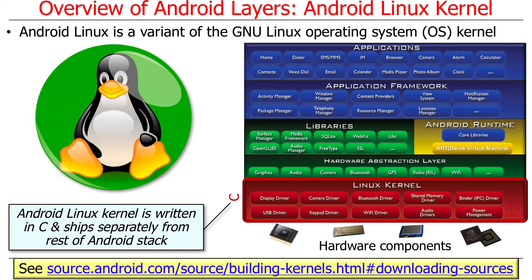If you go to source.android.com, you'll find access to Git repositories where you can check out Android — everything from above the kernel up to the app layer. There's one family of Git repositories that stores the Android source code for everything that's not the kernel. If you poke around that link, you'll find instructions for downloading the Android Linux kernel, which is not housed in the same Git repository as the rest of the code. They're in two separate places, mostly due to legal and licensing issues. They evolve at different rates, and different groups of people work on them.